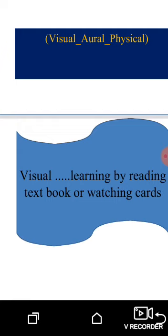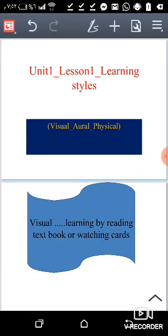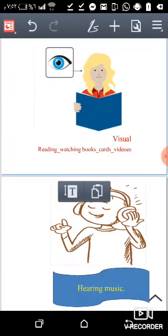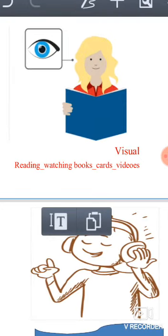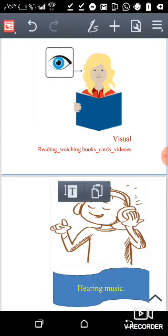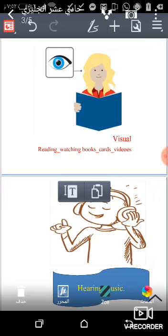So this is the first one: visual learner. The second is oral. Before starting with the second, look here - we have a girl and she is reading, so she is visual. Visual means reading or watching cards or videos. Now here, somebody is hearing, maybe hearing music, maybe hearing sound or words.